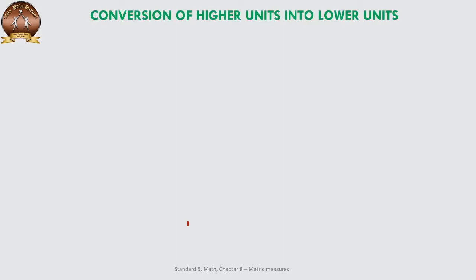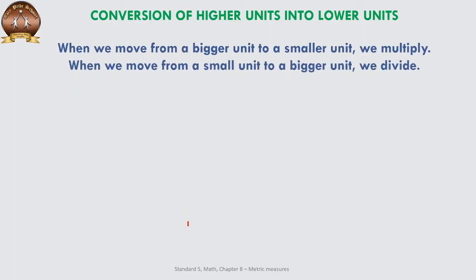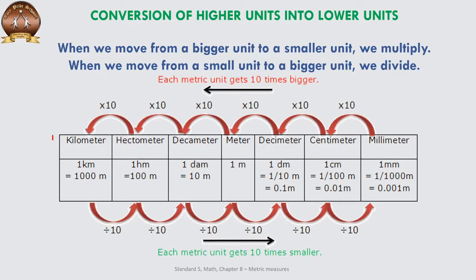Now the conversion of higher units into lower units: when we move from a bigger unit to the smaller unit, we multiply. When we move from a small unit to a bigger unit, we divide. There is a table which represents kilometer, hectometer, decameter, meter, decimeter, centimeter, and millimeter.